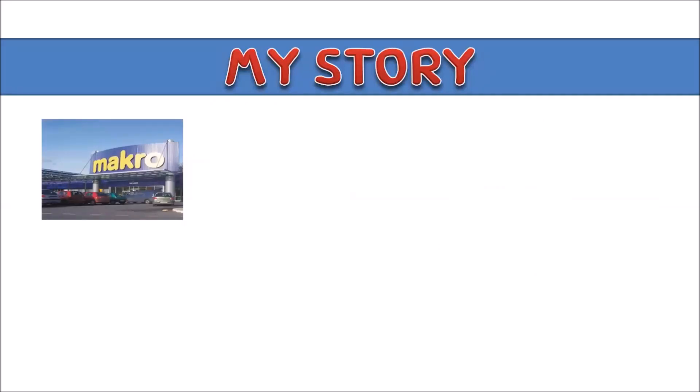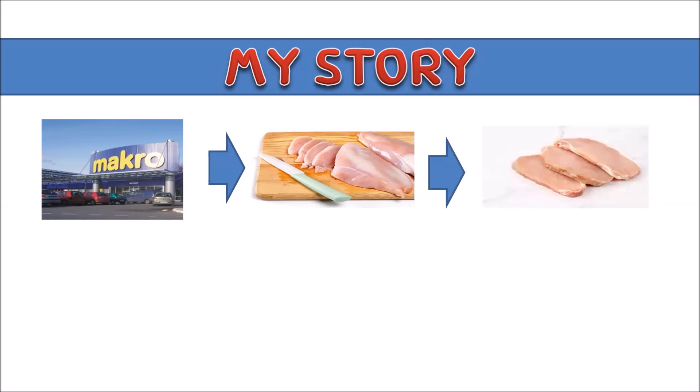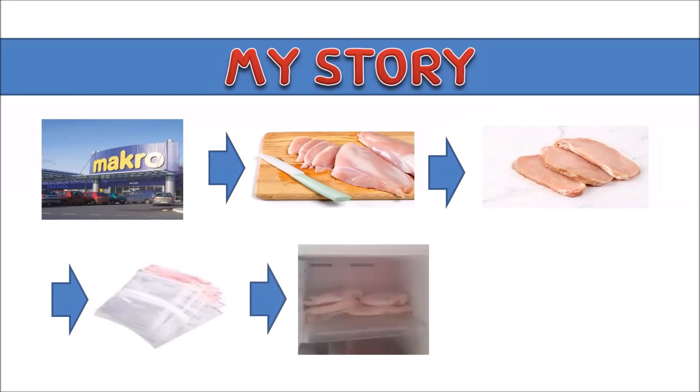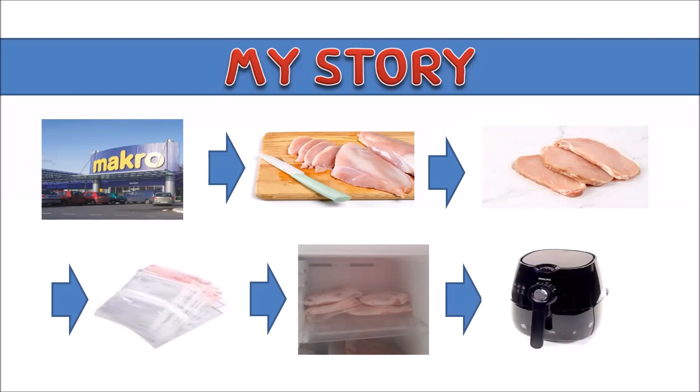Now what changed? Every Sunday I go to Makro and I buy chicken or pork or beef and then slice it up. I also bought zipper bags. Now I put those sliced meats in the zipper bag and one zipper bag is equal to one serving. So what happens is that when my son is hungry he just needs to get one bag and then put it in the air fryer.